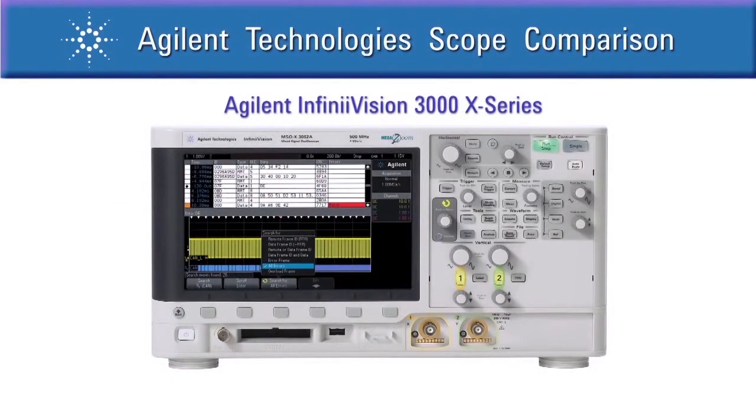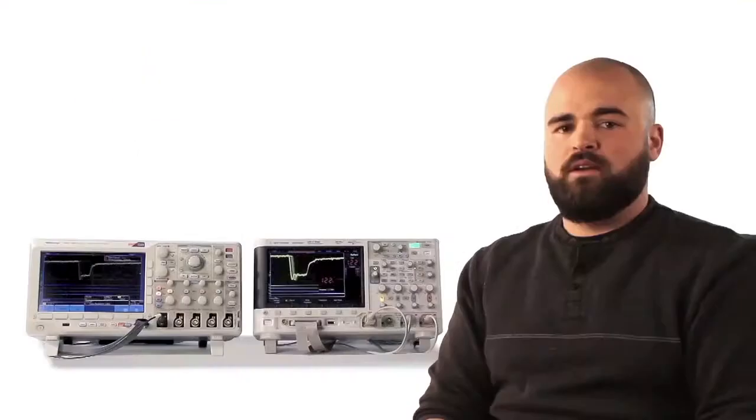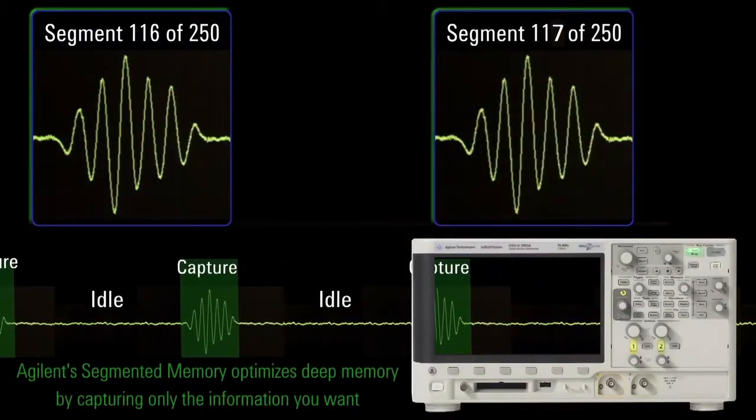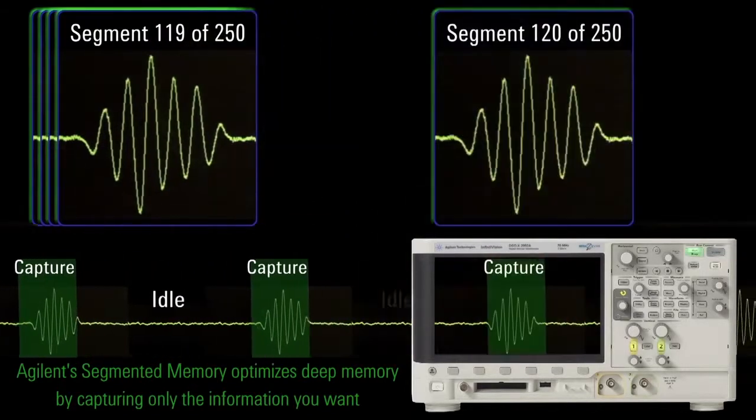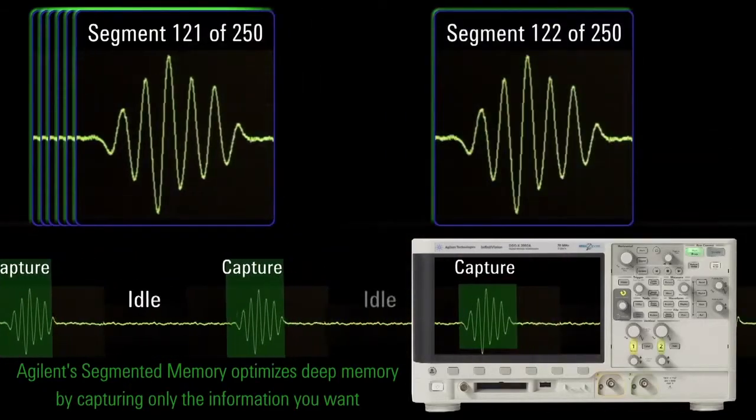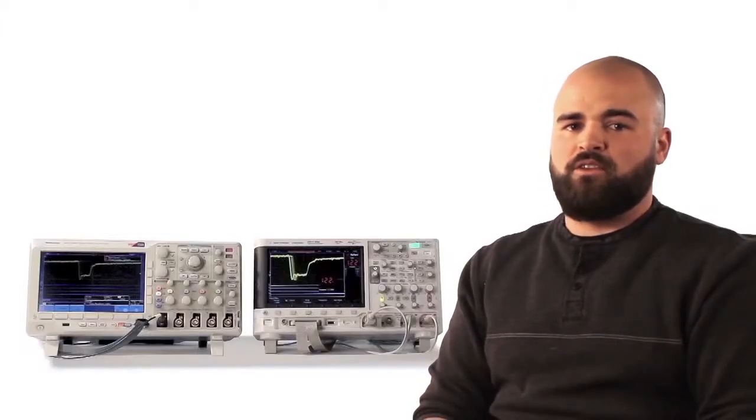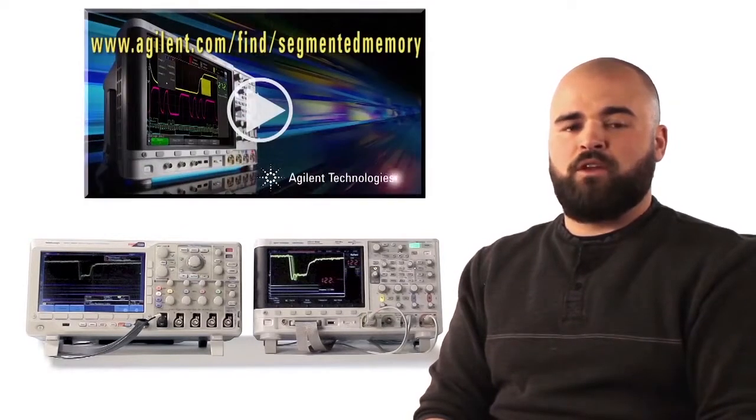InfiniVision scopes handle memory depth automatically to keep performance high. Additionally, Agilent uses smart memory technology to capture only the information you're looking for and ignore irrelevant data in between. We call this segmented memory, which is not offered in the Tektronix 3000 series. Learn more about segmented memory in our segmented memory video.